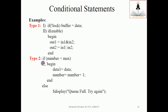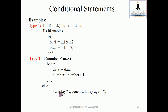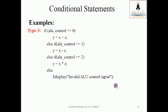If number is less than maximum, the statements grouped under begin and end will execute — because there are two statements, we need begin and end. data1 will be assigned and number will be incremented. If this is false, the else statement executes: the system task $display prints 'queue is full, try again' to the console.